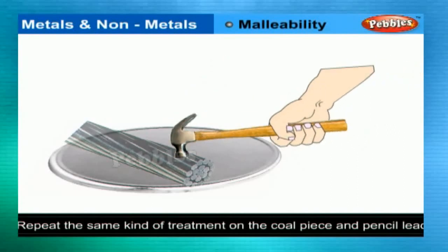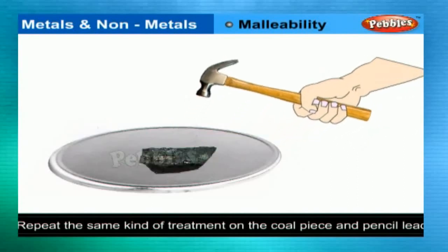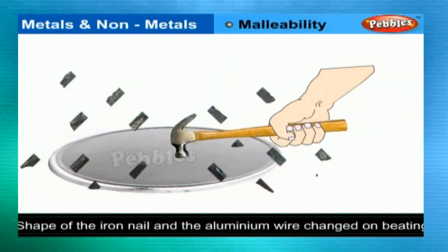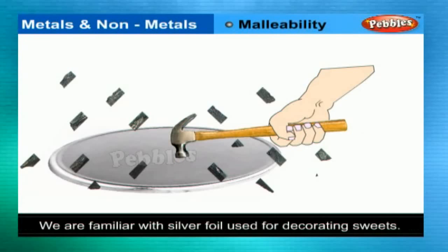You must also be familiar with the aluminium foil used for wrapping food. The property of metals by which they can be drawn into wires is called ductility. Metals are lustrous, malleable, ductile, and sonorous.